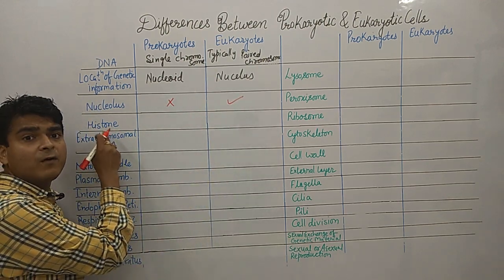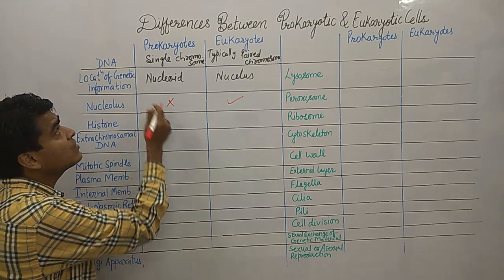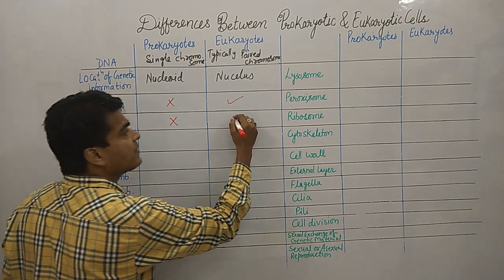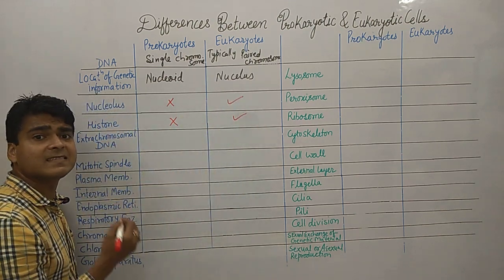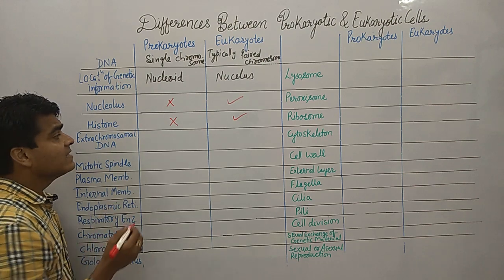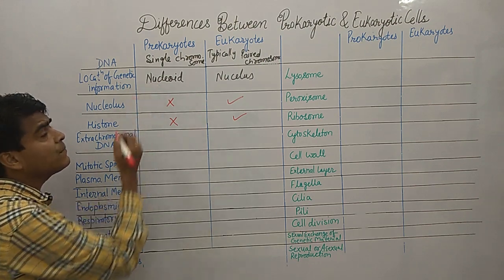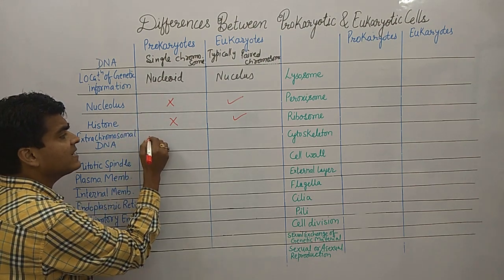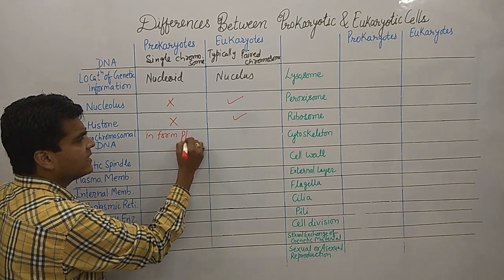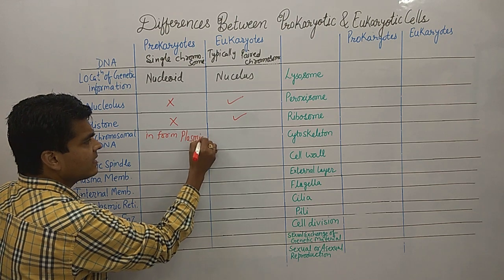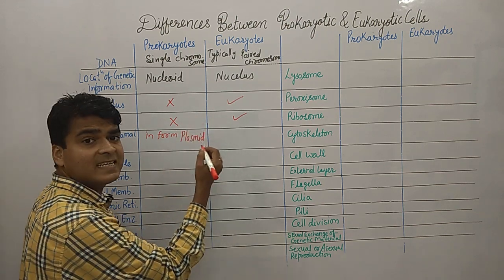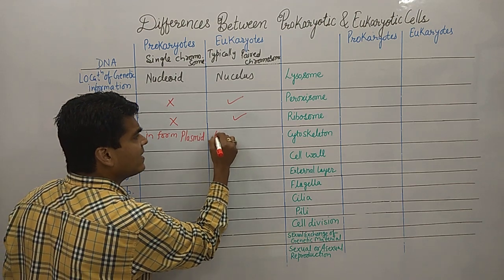Histone is also absent in prokaryotes and present in eukaryotic cells. Regarding extra-chromosomal DNA: in prokaryote cells it is present in the form of plasmid, whereas in eukaryote cells it is present in organelles.